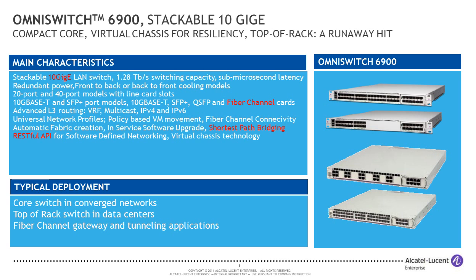Moving on from the core switching components: the 10K and the 9800 are both chassis-based solutions. The OmniSwitch 6900 is a compact core that has been a runaway hit for Alcatel-Lucent Enterprise. It's very versatile — a stackable switch with 10 Gbps ports and 40 Gbps uplinks, which allows it to be used as a small core switch using virtual chassis technology.